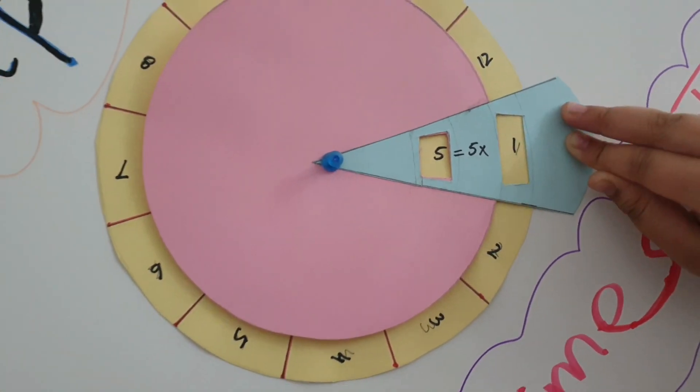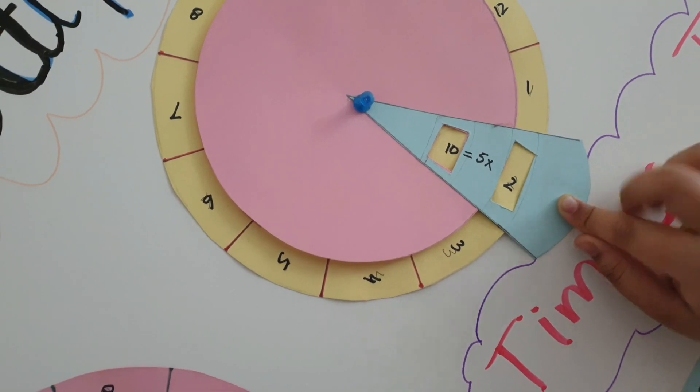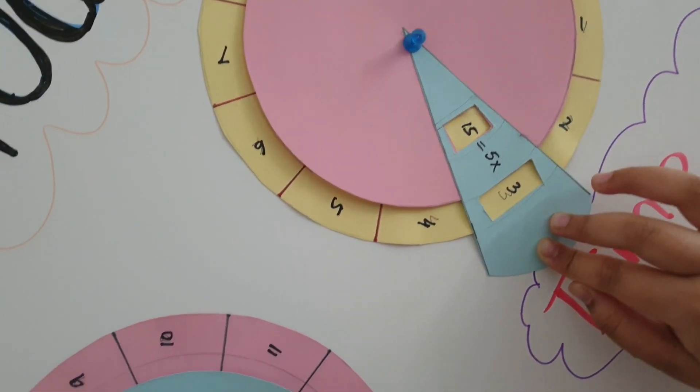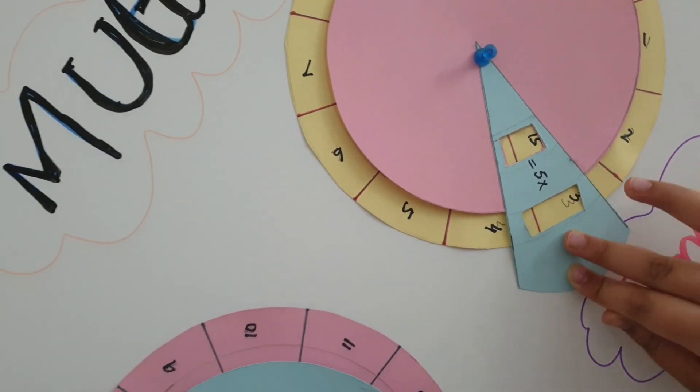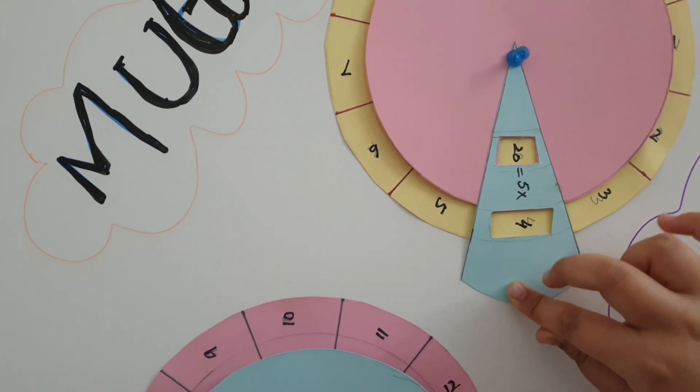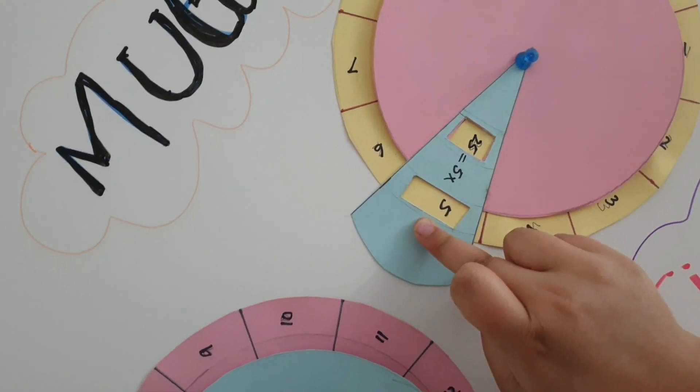5 1s are 5, 5 2s are 10, 5 3s are 15, 5 4s are 20, 5 5s are 25.